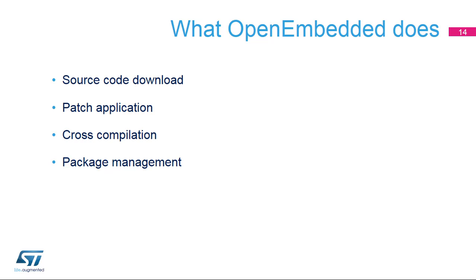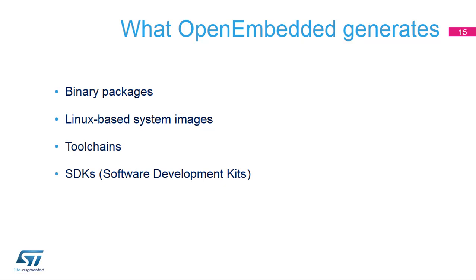OpenEmbedded eventually creates packages under different possible formats that can be installed the same way on an Ubuntu or Debian PC — for example, apt-get install on such a PC could also be done on the target. In practice, OpenEmbedded generates a set of binaries: binary packages, Linux-based system images, kernel images, device trees — everything your device needs to run the Linux system you have compiled. It also generates tool chains: before cross-compiling, OpenEmbedded compiles the tool chain itself, which explains why compilation may take a significant amount of time, but it is quite powerful since you don't need to find the right tool chain separately.